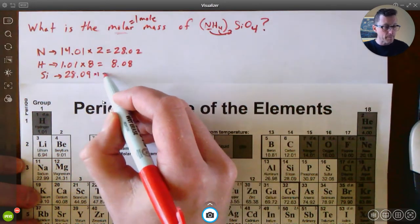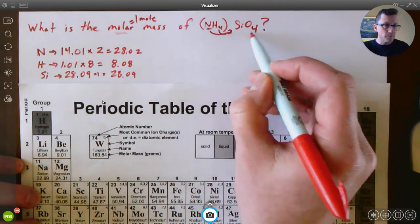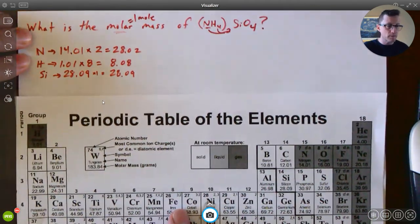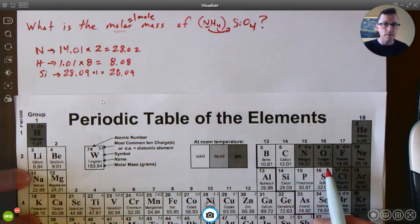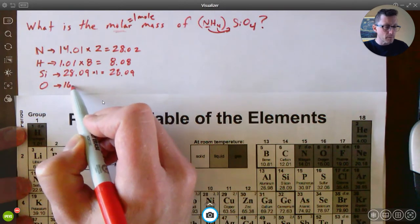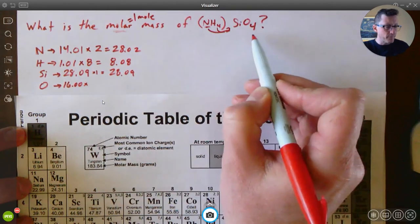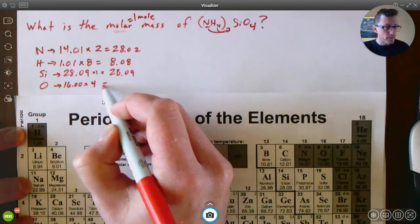Last one I have is oxygen. So I have oxygen, which is right here - 16.00 for one mole of oxygen. But I have four of those, and multiply that by four, and that'd be 64.00.